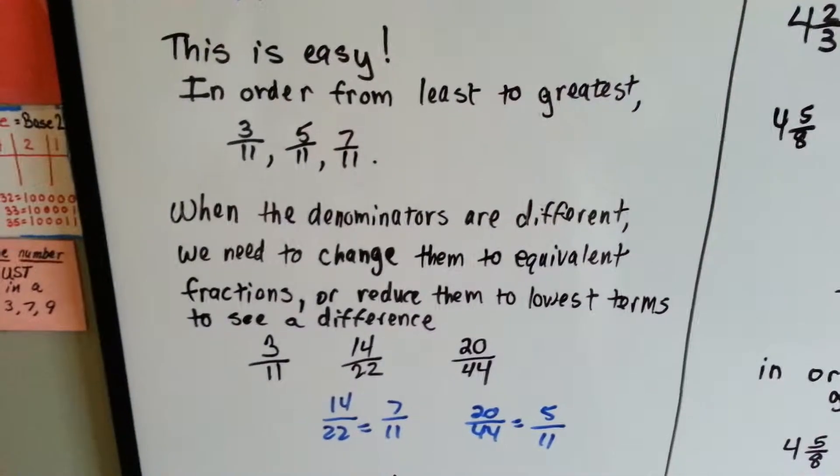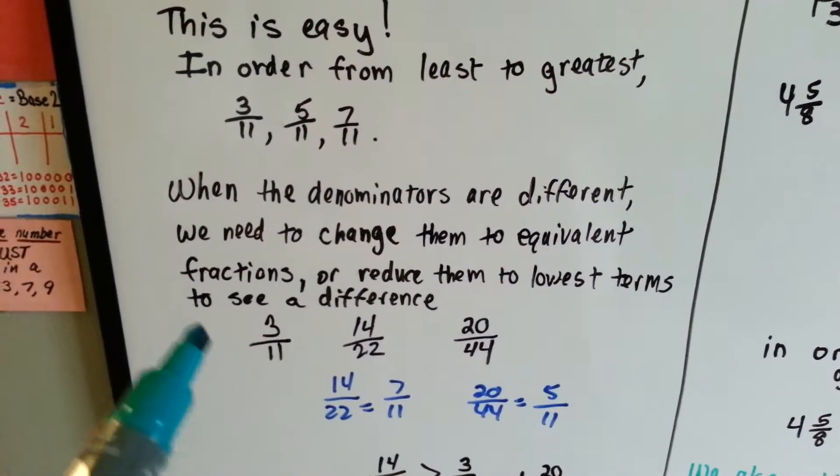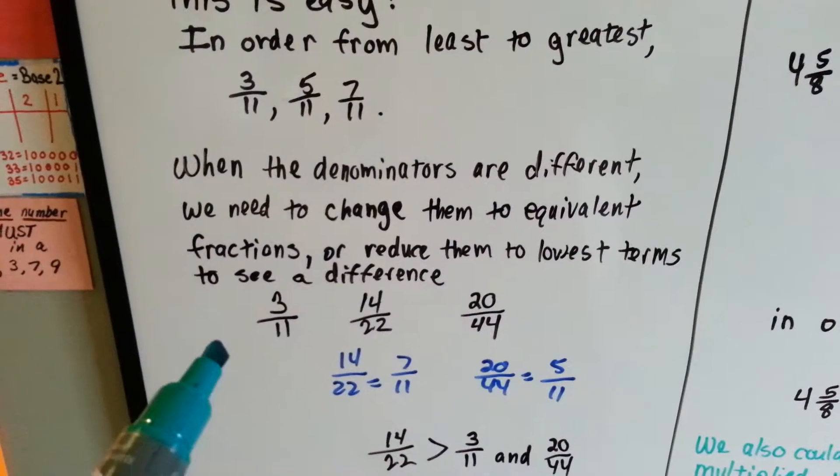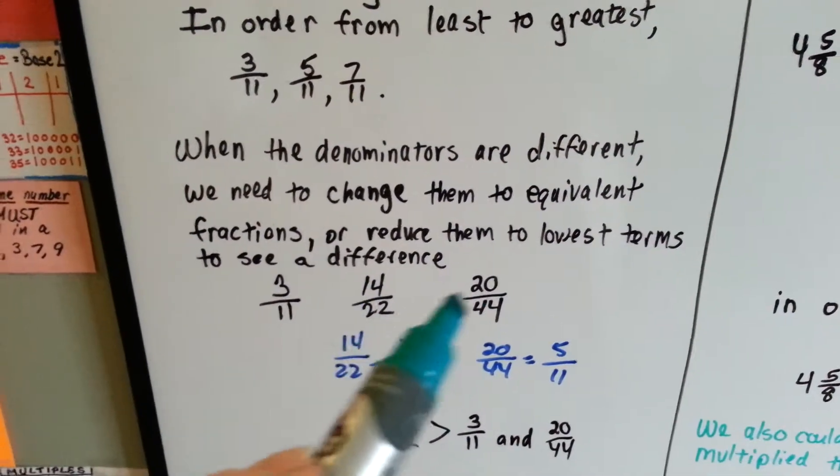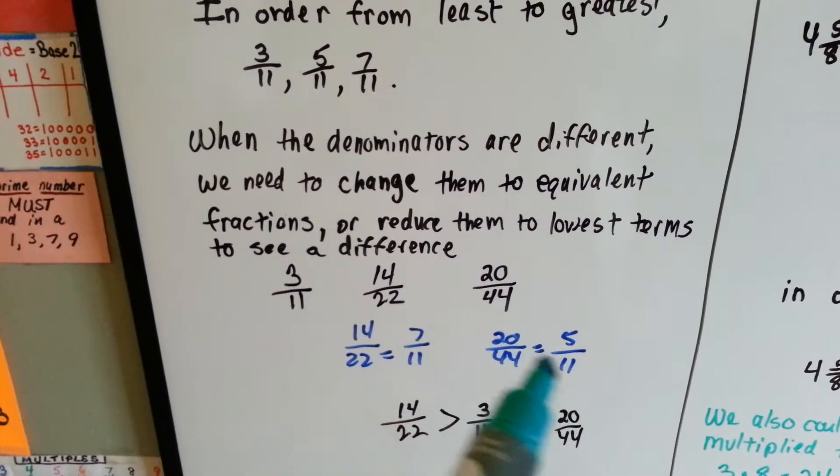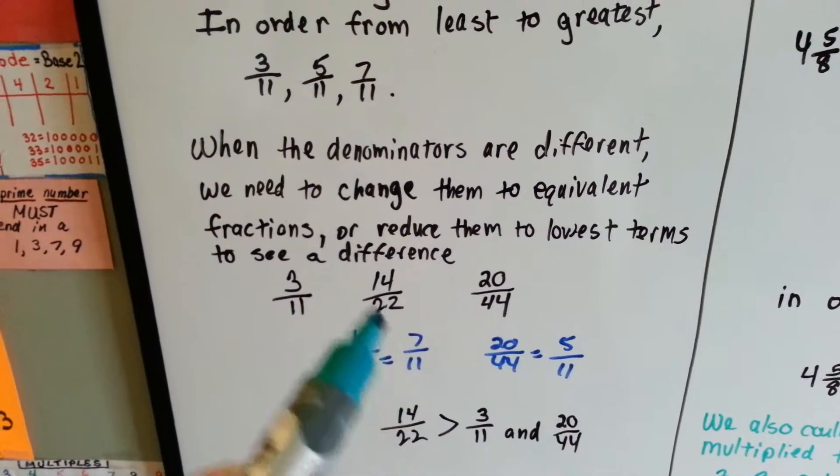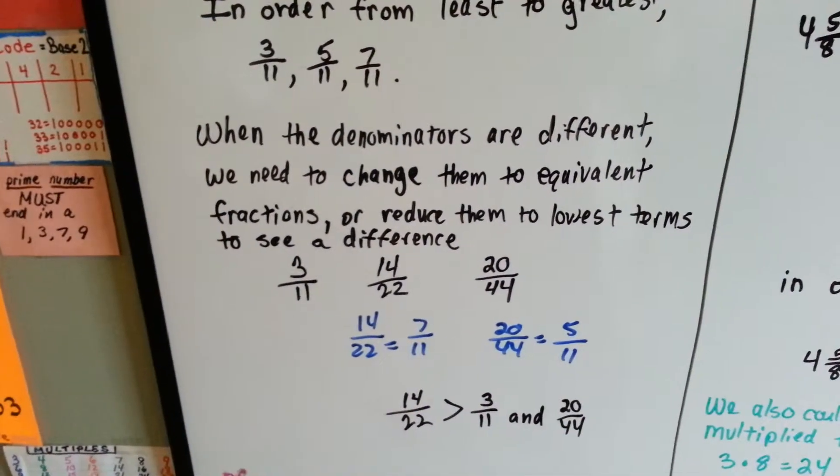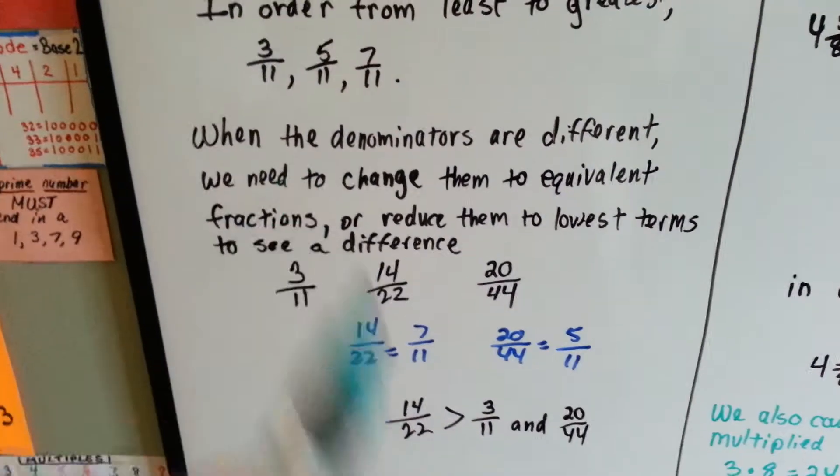When the denominators are different, we need to change them to equivalent fractions or reduce them to lowest terms to see a difference. These aren't reduced. If they were, we would see that they were still the same fractions and that this was the smallest, this was the middle one, and that was the biggest. Might have to reduce them.